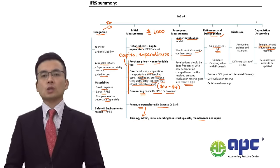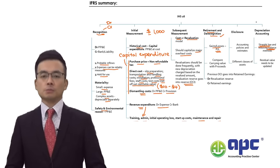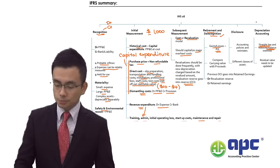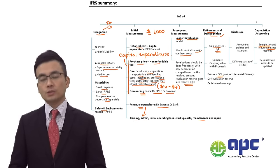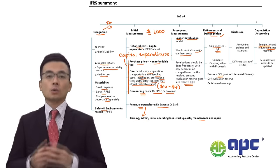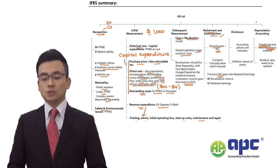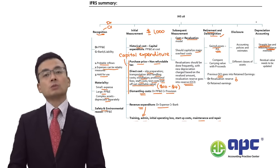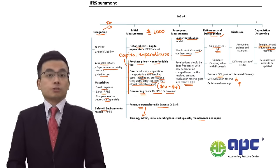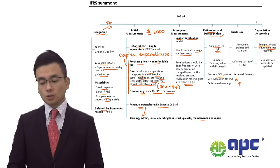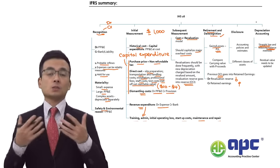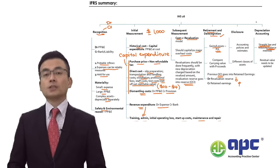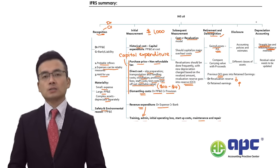The balancing figure in the disposal account represents gains and losses from disposal. If using the revaluation model, when we derecognize the asset, we transfer the previous revaluation reserve into retained earnings by debiting the revaluation reserve and crediting retained earnings.